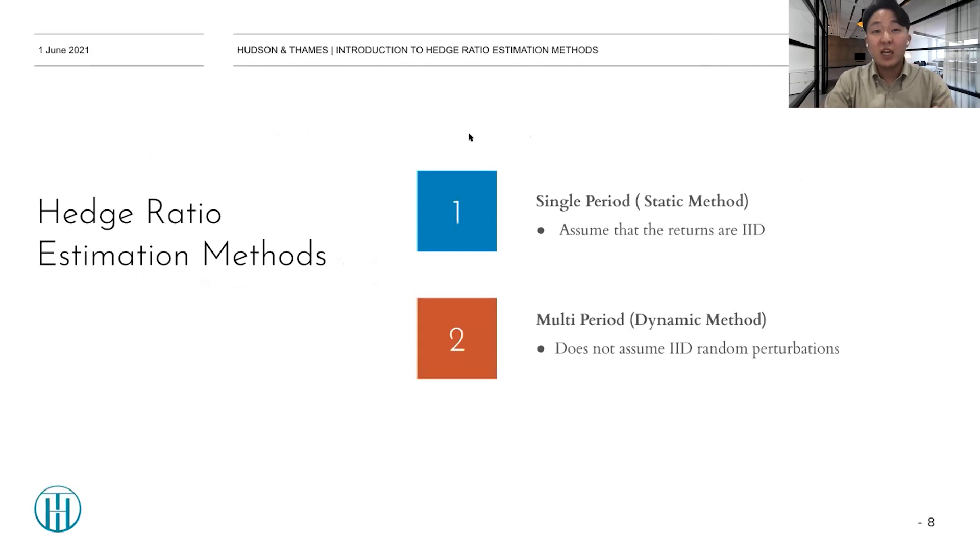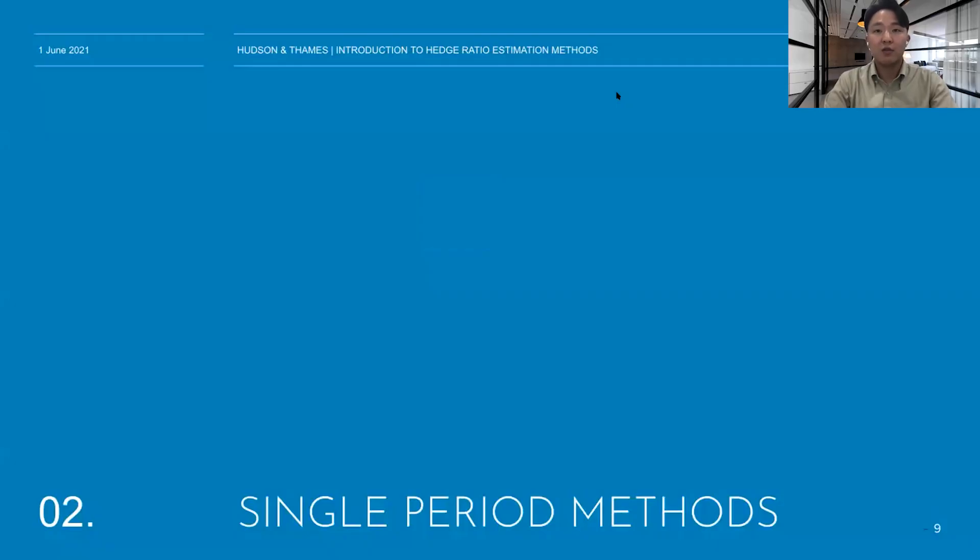So, the hedge ratio estimation methods are usually split into two ways of estimation. One is single period and the other is multi-period, as I mentioned before. And the single period method is also known as static method. And it assumes that the returns of stocks or returns of portfolios are IID. However, the multi-period, which is also known as dynamic method, does not assume IID random perturbations. And let's take a look at the single period method first.